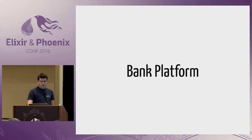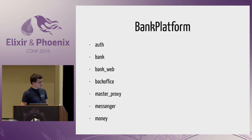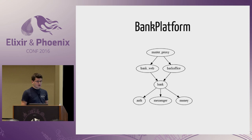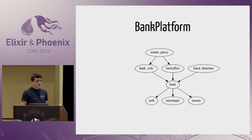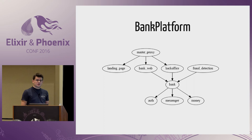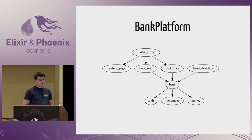So this is our bank platform — we have seven applications: Auth, Bank, BankWeb, BackOffice, MasterProxy, Messenger, and Money. Each is an OTP application with well-defined dependencies, and because of that we can actually graph how our platform looks: what depends on what. This gives us that top-level architecture that screams its intent when you come into a new project. As we evolve, we can add even more applications: maybe a fraud detection subsystem monitoring incoming transactions, a marketing landing page, or a CMS. We can manage the growth of our system by keeping applications separate.